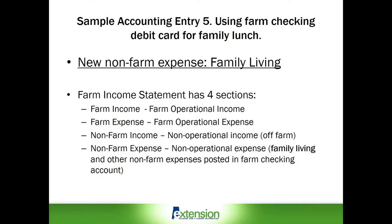If we look at a farm income statement, it has four sections. One is farm income, which is operational income. One is farm expense, which is farm operational expense. Then you have non-farm income, such as off-farm wages. And lastly, you have non-farm expense, which is non-operational expense, such as family living and other non-farm expenses posted in the farm checking account.